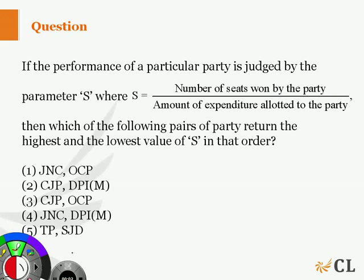In the next question, if the performance of a particular party is judged by the parameter S, where S is equal to the number of seats won by the party divided by the amount of expenditure allotted to the party, then which of the following pairs of parties return the highest and the lowest value of S in that order?